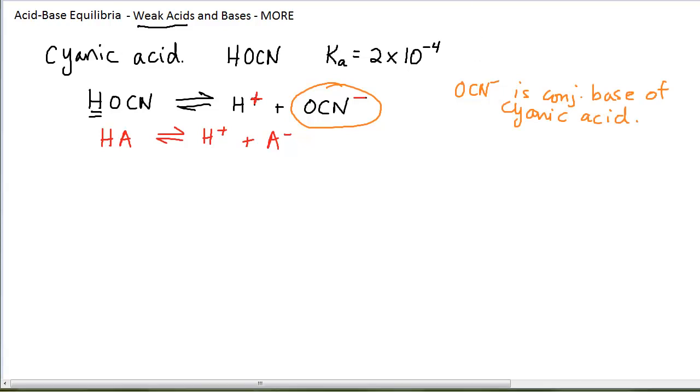This OCN minus has a name. You may or may not be familiar with it. Usually it is very much similar to the name of the acid that it came from. In this case, this is called the cyanate ion. This may be one of the harder ones. You're going to find a lot of these ions that are the conjugates of the acids. They're very familiar.